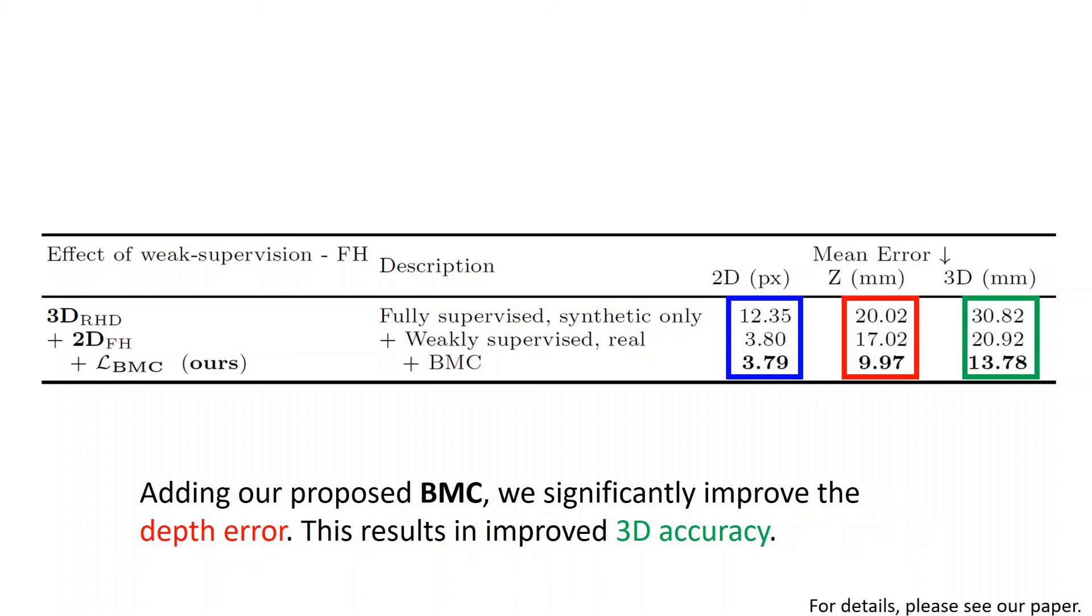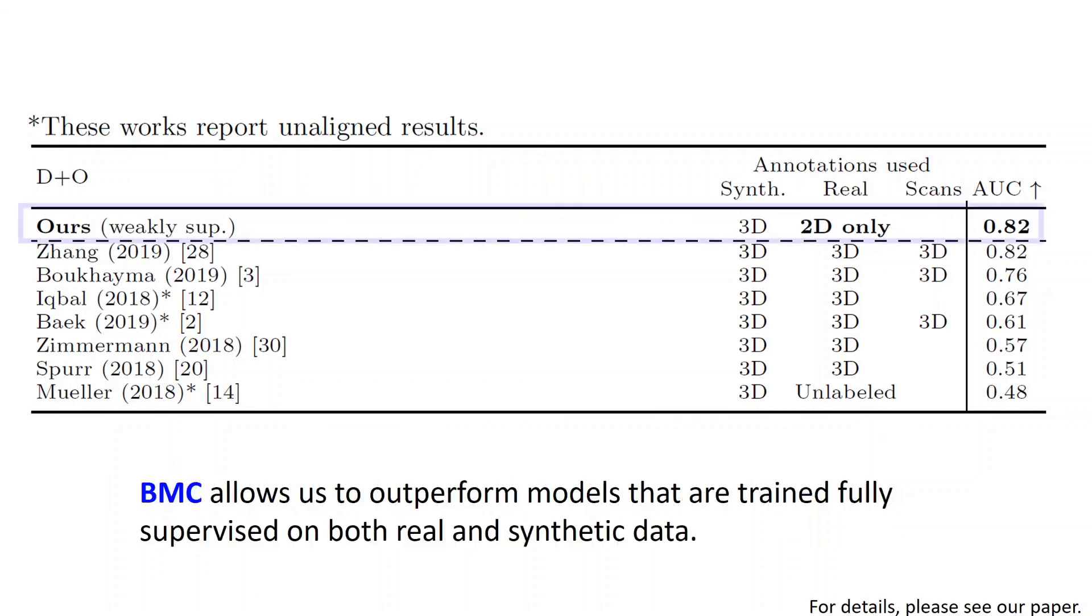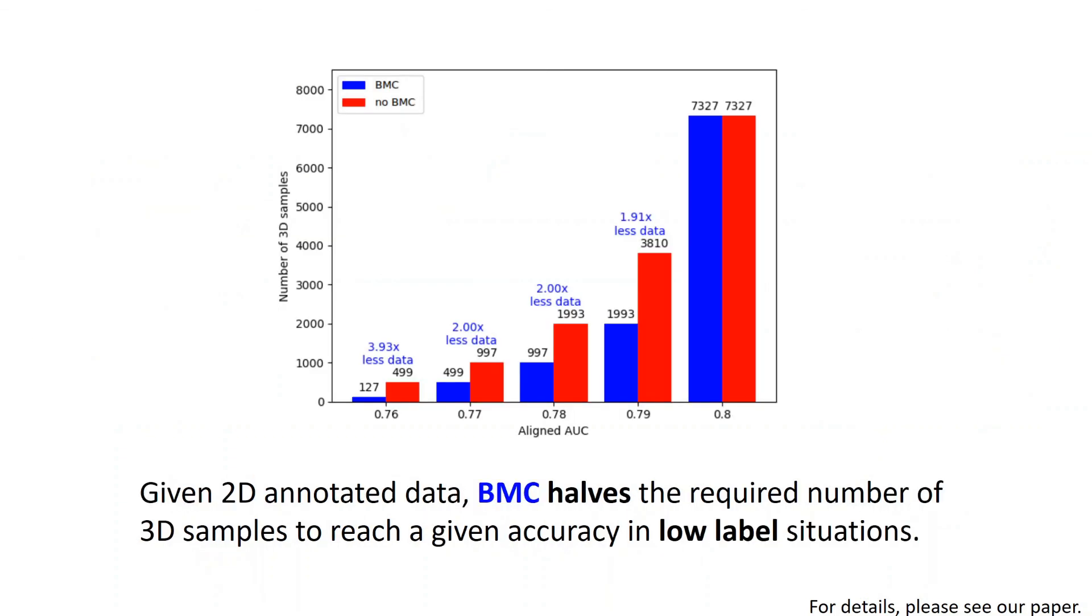Having our proposed BMC, we significantly improved the depth error. This results in improved 3D accuracy. Using solely 3D labeled synthetic data and 2D labeled real data, BMC allows us to outperform models that are trained fully supervised on both real and synthetic data. Furthermore, given 2D annotated data, BMC halves the required number of 3D samples to reach a given accuracy in low labeled situations.